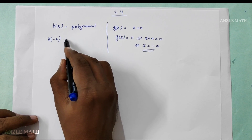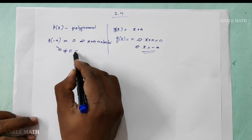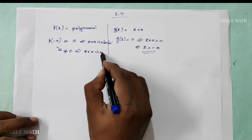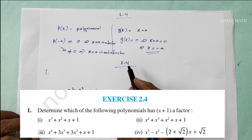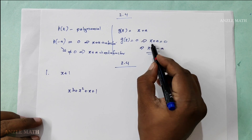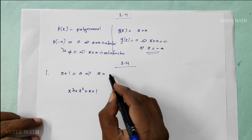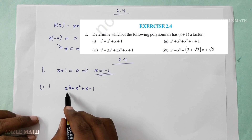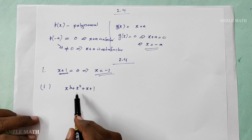We will check: g of x is equal to 0. We will check that x plus a is a factor — we will check g of x is equal to 0. If we want x plus a to be a factor, x must equal 0. So x plus a equals 0, which means x plus a equal to 0.